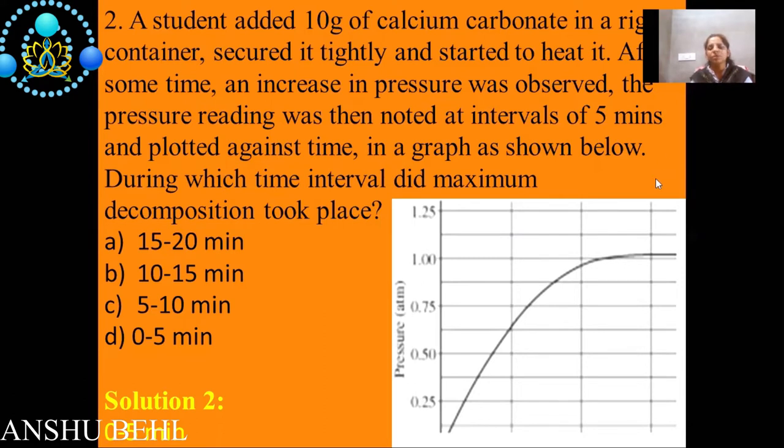When we observe this type of graph, this graph can be split into three portions. First portion we can see it is a straight line. So straight line means this is directly proportional. So we can say that amount of pressure of gas which is coming out is directly increasing with respect to time.